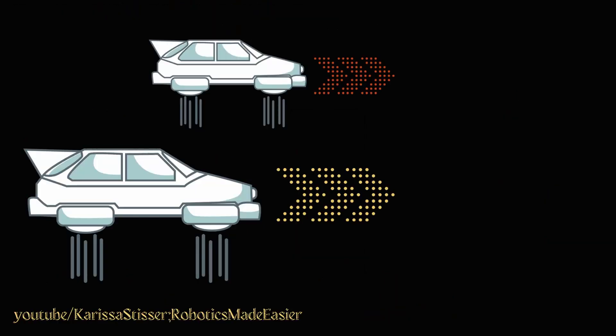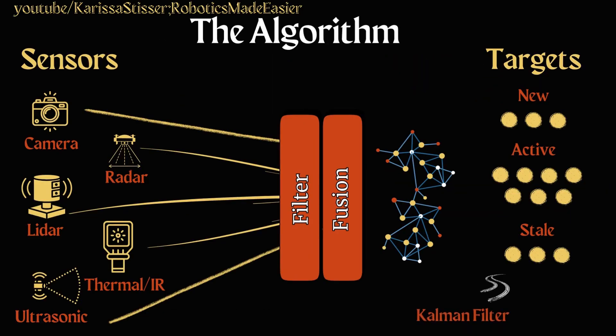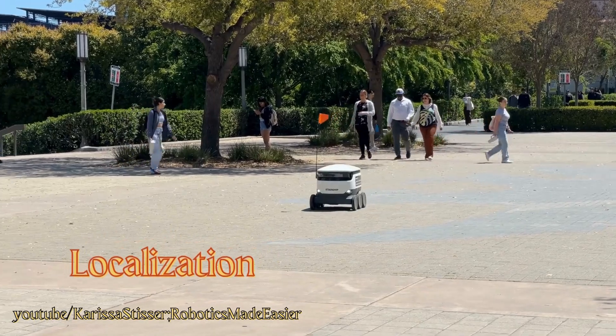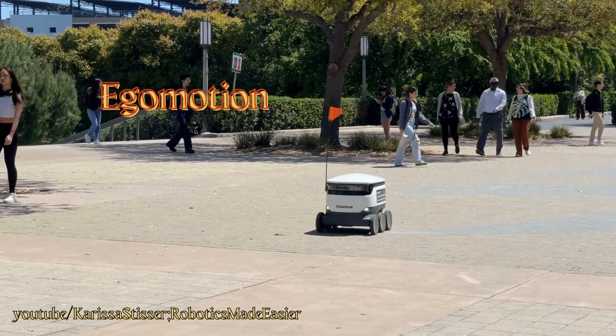Once you have your targets and data, you'll need to track your established targets, which is often done with some form of Kalman filter, but can also be done with a particle filter. And you're reliant on a good localization to ensure you can remove the robot's motion, or ego motion, from the detected velocity of your targets.